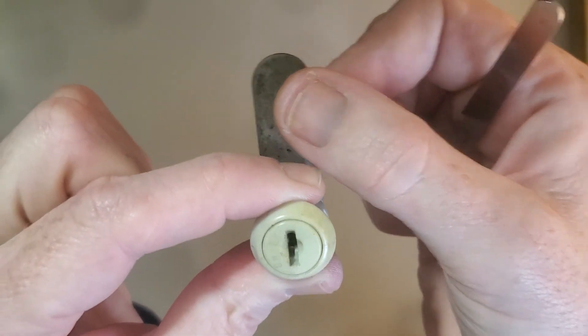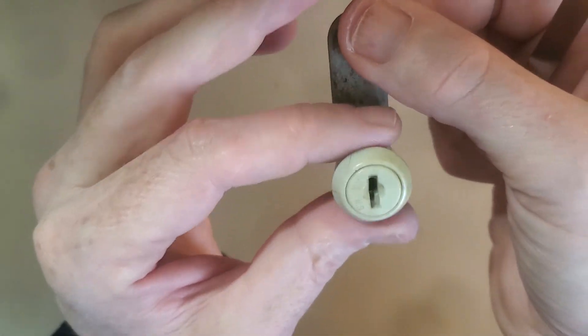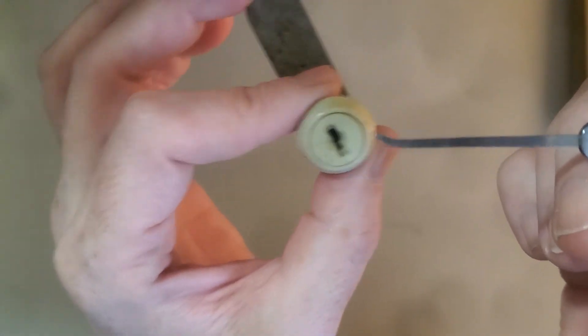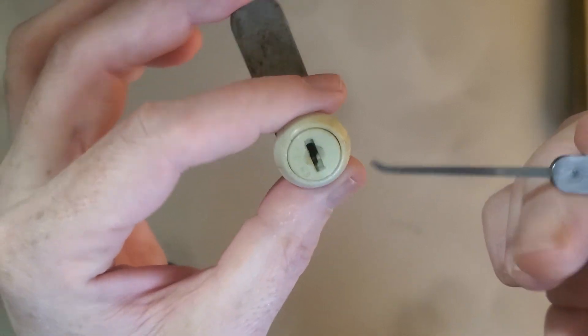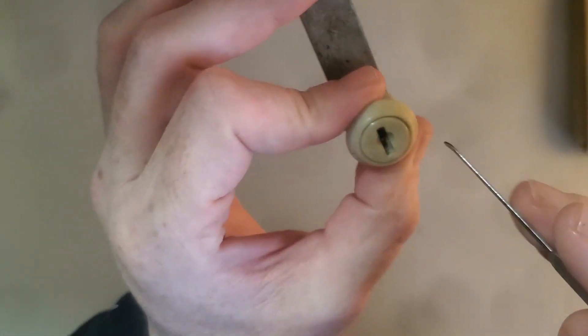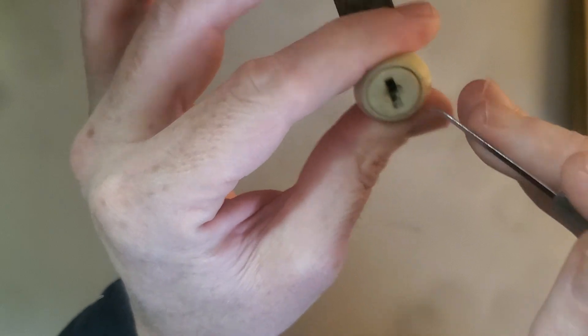It conveniently has this handy built-in tension around the back, so I'm going to use that and the short flat hook from the Genesis set. We're going to see if we can get this picked open.